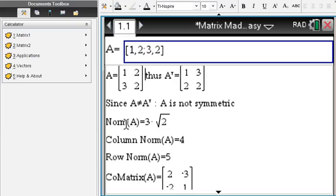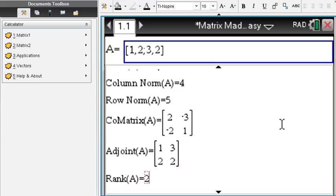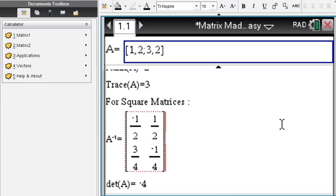And then since you analyze A, you can find the norm, the column norm, the row norm, the co-matrix, the adjoin, the rank, the trace. This is very nice. The determinant also down here to give you a quick idea about the matrix. But of course you can get all these answers also in step-by-step format.